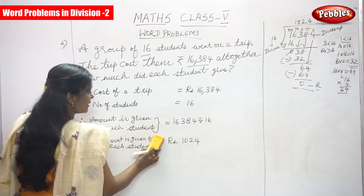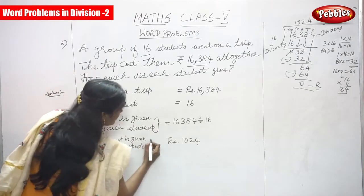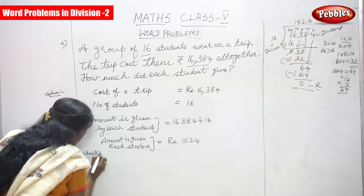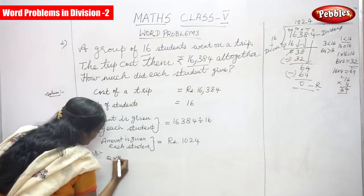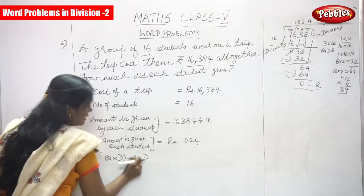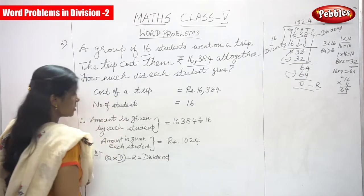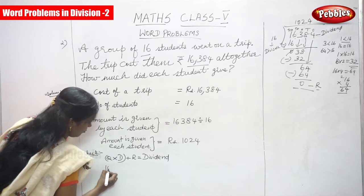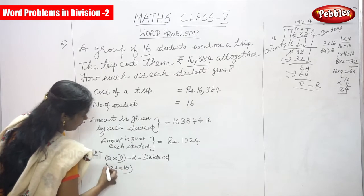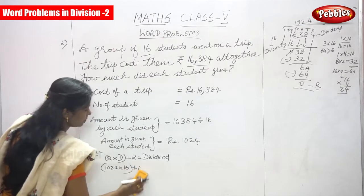You must know whether the answer is right or wrong. So you have to use the check method. The check method formula is: quotient times divisor, plus remainder, equals dividend. Quotient is 1024, multiplied by divisor 16, plus remainder 0.